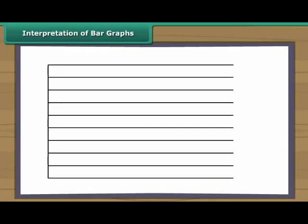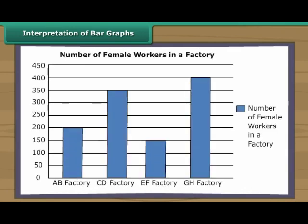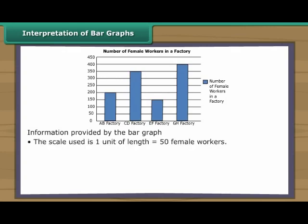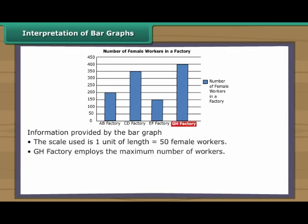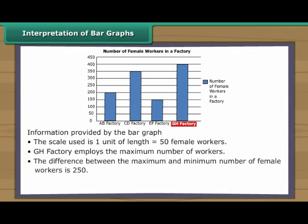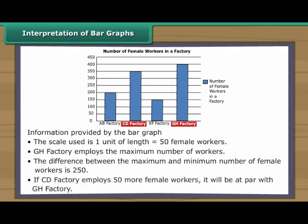This vertical bar graph shows details of female workers in a factory. The scale used is 1 unit of length equal to 50 female workers. GH factory employs the maximum number of workers. The difference between the maximum and minimum number of female workers is 250. If CD factory employs 50 more female workers, it will be at par with GH factory.